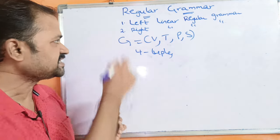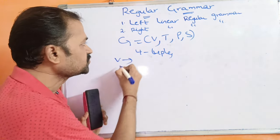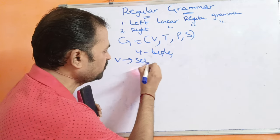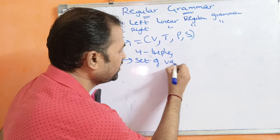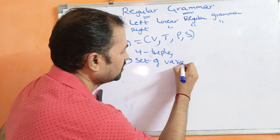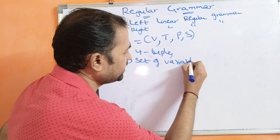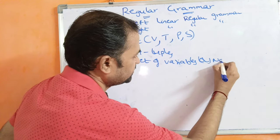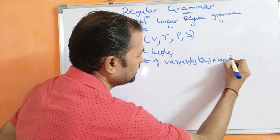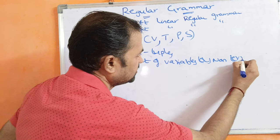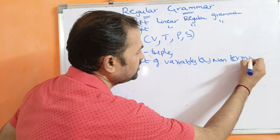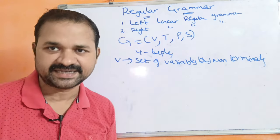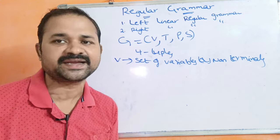First, V means set of variables, which can also be called as non-terminals. Non-terminals are represented by uppercase letters, i.e., capital letters.